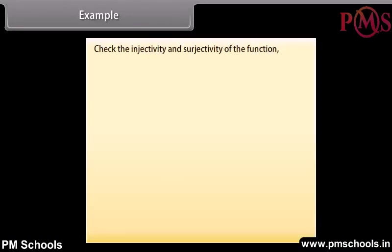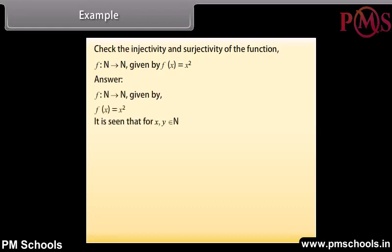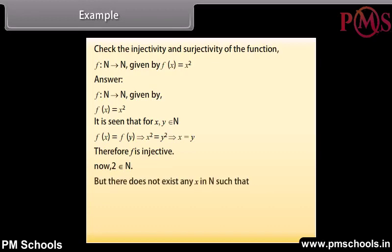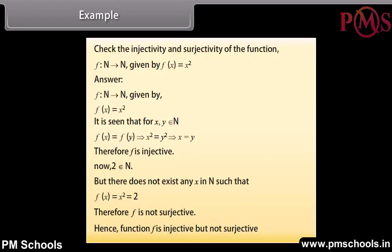Example: Check the injectivity and surjectivity of the function f from N to N given by f(x) = x². Answer: It is seen that for x, y belonging to N, f(x) = f(y) implies x² = y², which implies x = y. Therefore, f is injective. Now, 2 belongs to N, but there does not exist any x in N such that f(x) = x² = 2. Therefore, f is not surjective. Hence, function f is injective but not surjective.